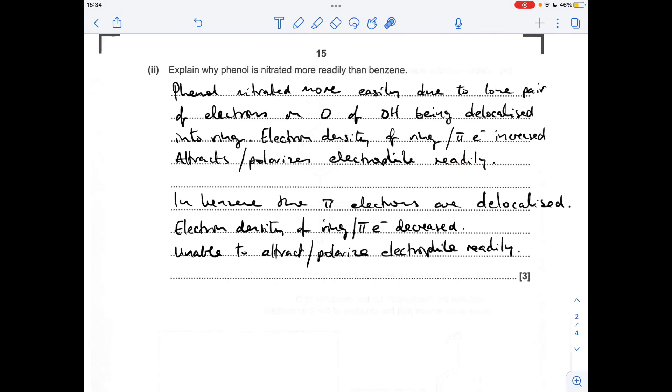In benzene, the pi electrons are delocalized so the electron density of the ring or the pi electron density is decreased or lower than phenol's. It's therefore unable to attract or polarize electrophiles as readily.